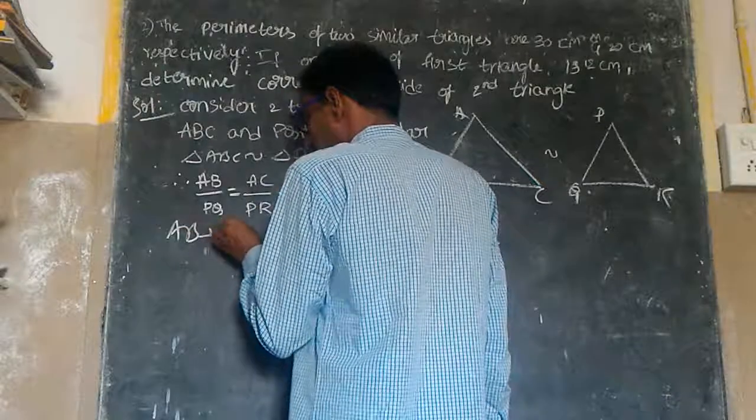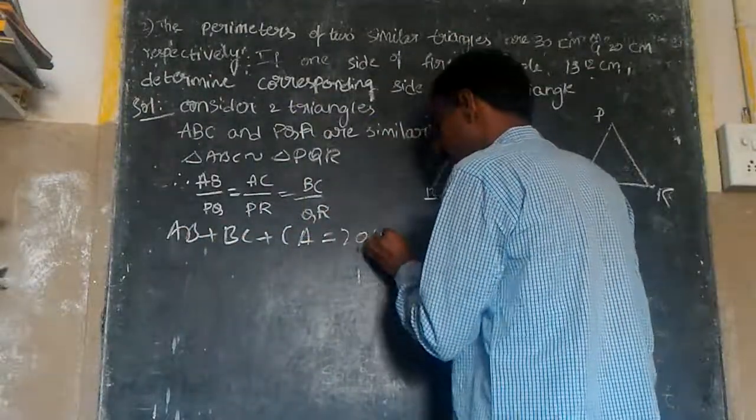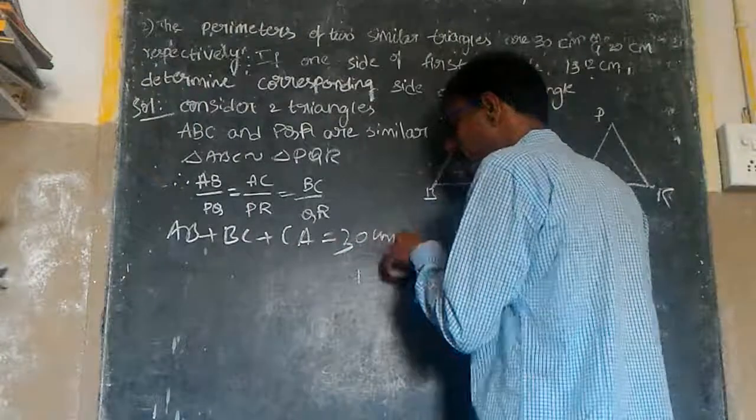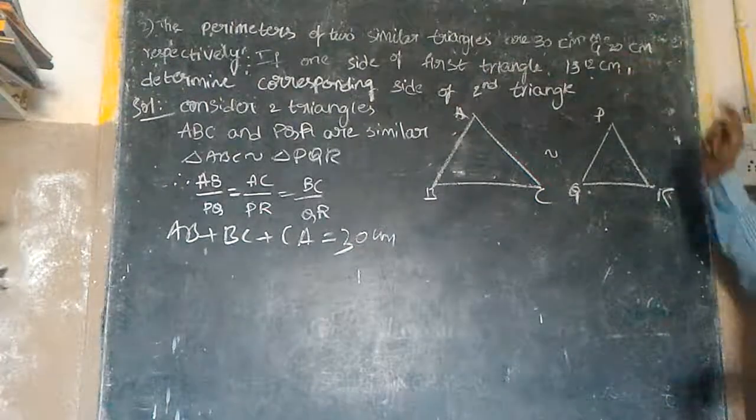AB plus BC plus CA is equal to 30 cm. The perimeter is equal to 20 cm.